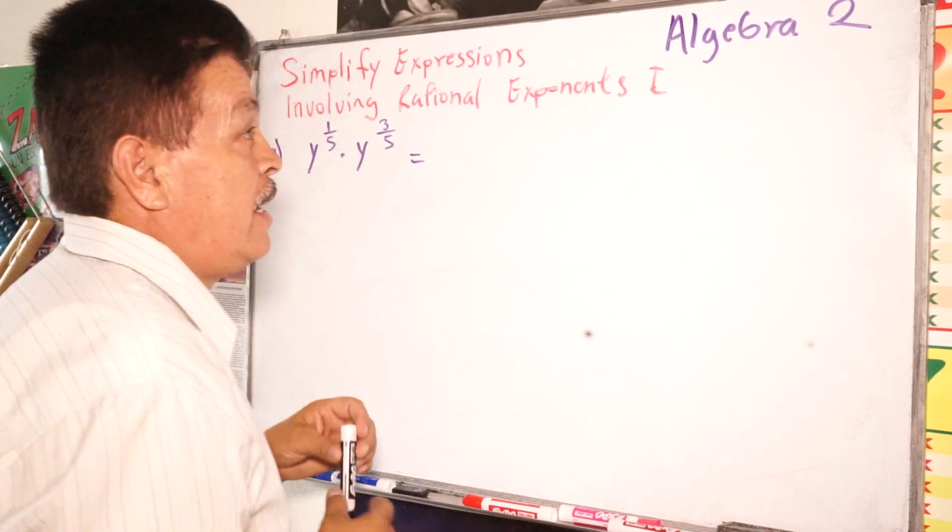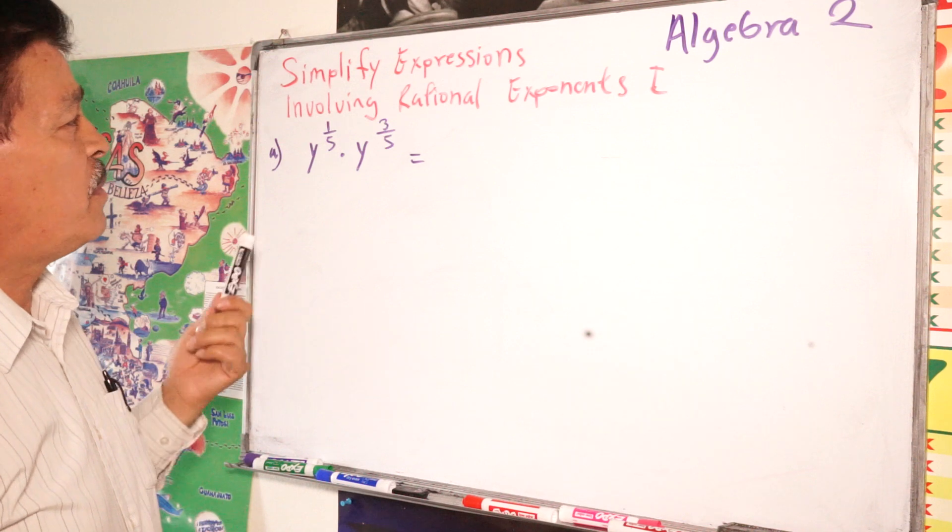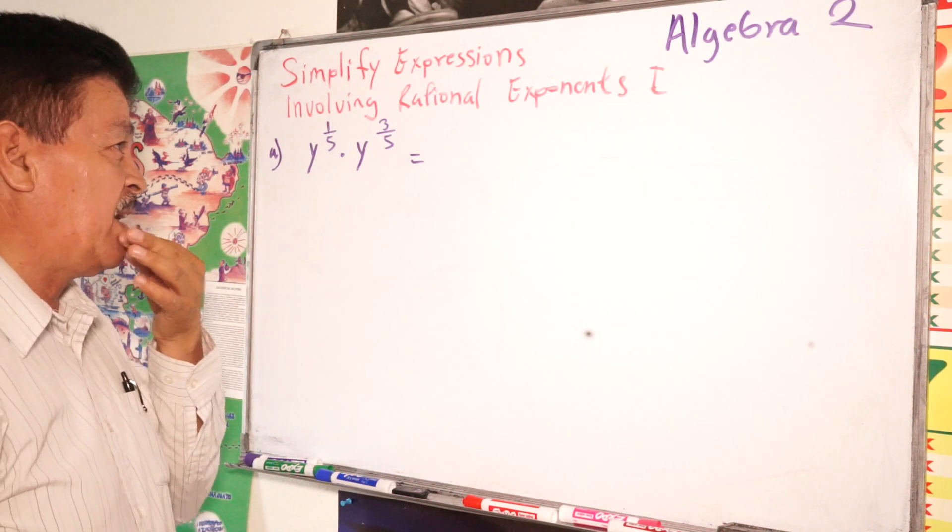Algebra 2 class. This class is for high school. Our topic for today is simplified expression involving rational exponents.